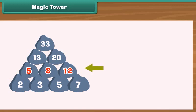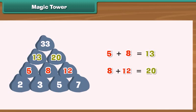Let us now take the stones of the second row. 5 plus 8 is equal to 13. 8 plus 12 equals 20. 13 and 20 form the row above.